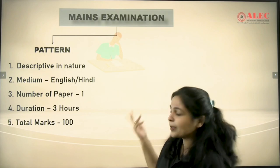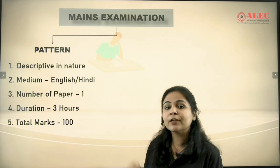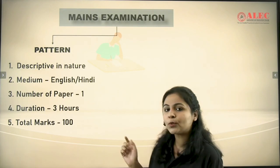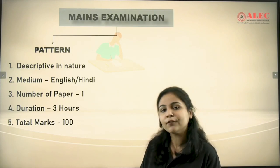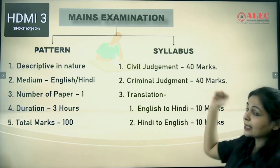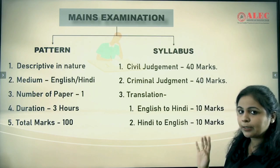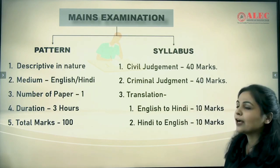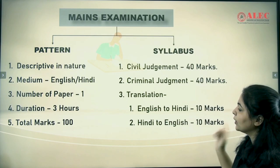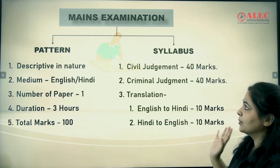The number of papers in the main exam is one. The duration will be three hours for the Judgment Writing paper, and the total marks are 100. In terms of syllabus, there will be a Civil Judgment and a Criminal Judgment, each carrying 40 marks. There will also be translation: English to Hindi and Hindi to English, carrying 10 marks each.